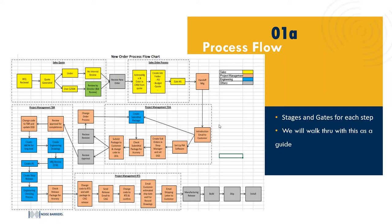The order then goes through Gate 1, which is a handoff to management — sales meets with a project manager to review the scope of work. An introduction email is sent to the customer stating who your PM will be. The PM will reach out to gather any additional information required, and will also work with you on any change in scope or order size, coordinating a change order with the salesman to get a revised price.